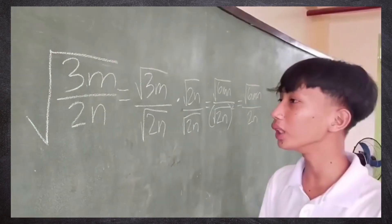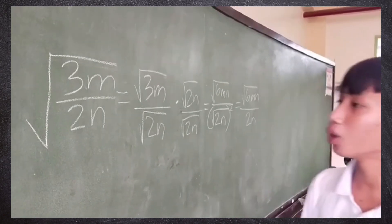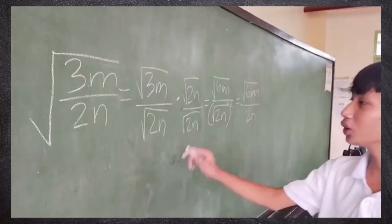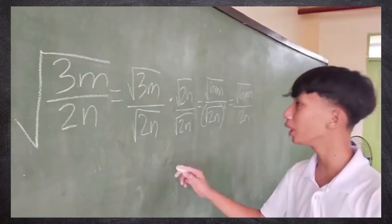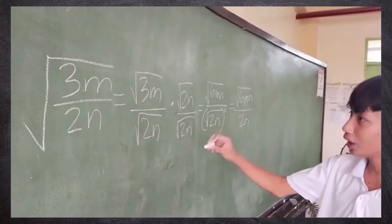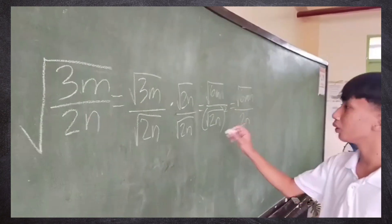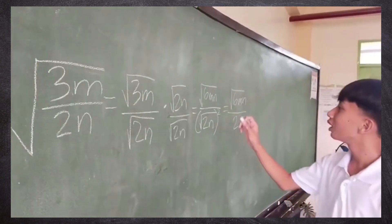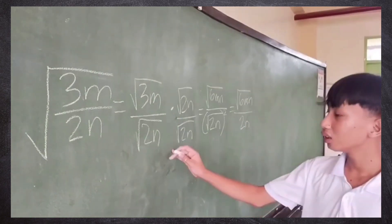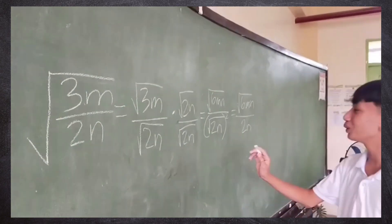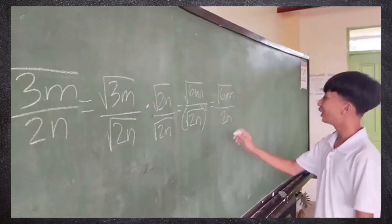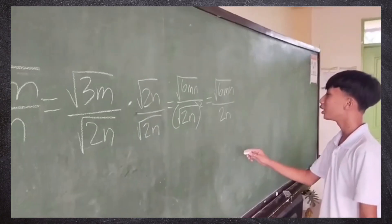Another example is square root of 3ab over 2ab. We rewrite it as square root of 3ab over square root of 2ab, then multiply by the denominator. Square root of 3ab times square root of 2ab equals square root of 6ab; square root of 2ab times square root of 2ab equals 2ab. The final answer is square root of 6ab over 2ab.